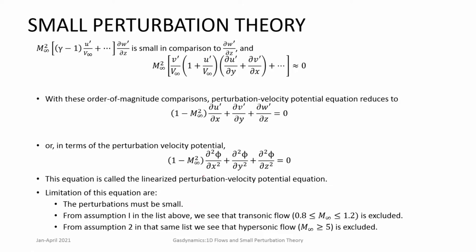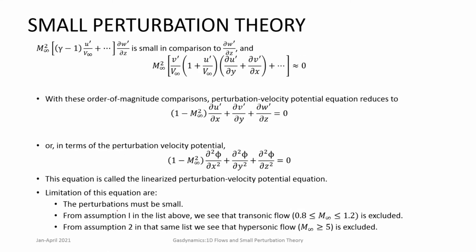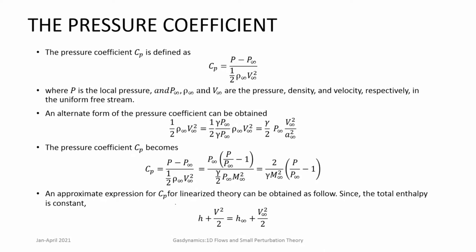Small perturbations correspond to thin airfoils and similar configurations. This linearized equation is valid for subsonic and supersonic flows — transonic flow is excluded. Additionally, for Mach numbers less than 5 (supersonic but not hypersonic), changes in v are also small, so hypersonic flow is also excluded. For subsonic and supersonic flows only, the linearized velocity potential equation holds good.